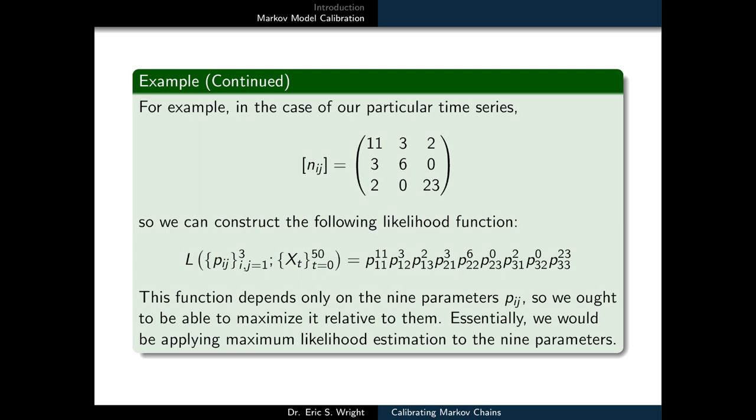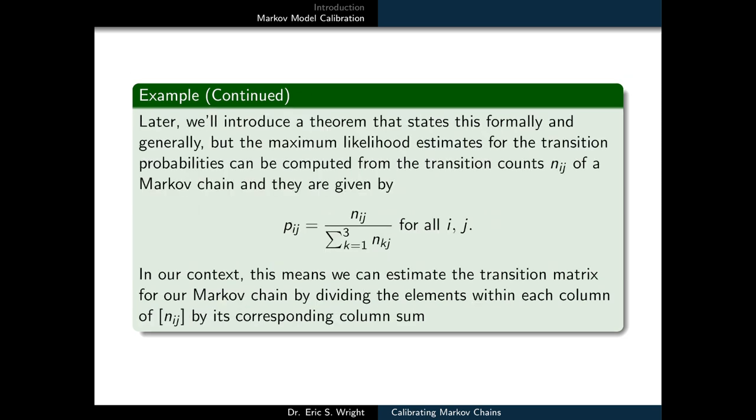Essentially, we would need to apply the maximum likelihood estimation technique to those 9 parameters. It takes a fair amount of theoretical work in order to establish the exact formulas for the maximum likelihood estimates of the transition probabilities coming from our likelihood function. We're not going to go into those theoretical details because they require more calculus than is necessary to get into for our purposes right now. Later, we will introduce the statement of a theorem that states our estimates formally.